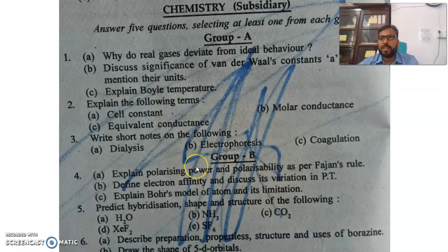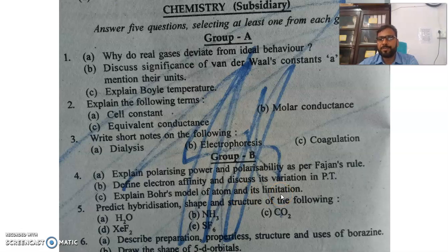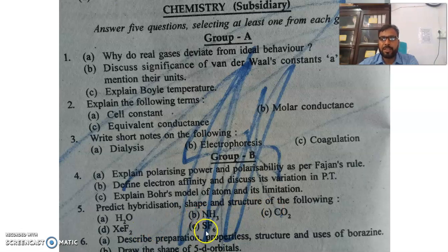Fourth question is from Inorganic Chemistry: explain polarizing power and polarizability as per Fajan's rules. Define electron affinity and discuss its variation in the periodic table. Explain Bohr's model of the atom and its limitations. Next question: predict hybridization, shape, and structure of water, ammonia, carbon dioxide, XeF2, and SF6.